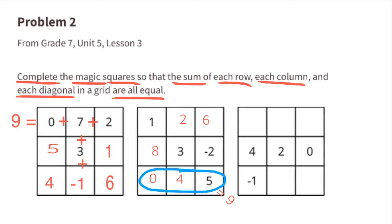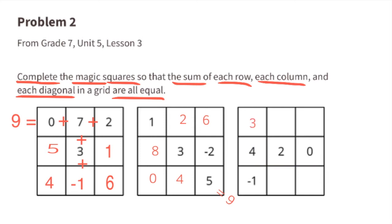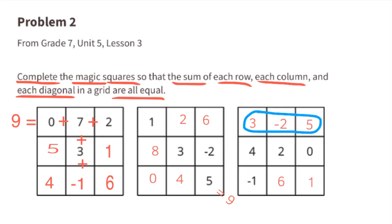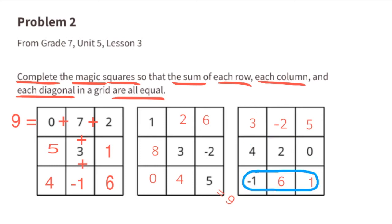Across the bottom: 0 plus 4 plus 5 equals 9. Moving to the next grid: they've given us 4 plus 2 plus 0, which equals 6. For this grid, every row, column, and diagonal needs to sum to 6. Left column: 3 plus 4 minus 1 equals 6. Across the top: 3 minus 2 plus 5 equals 6. Middle row: 4 plus 2 plus 0 equals 6. Across the bottom: negative 1 plus 6 plus 1 equals 6.